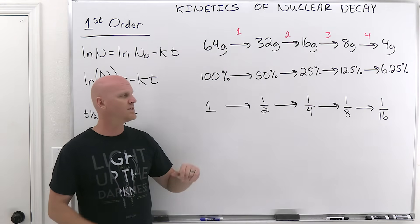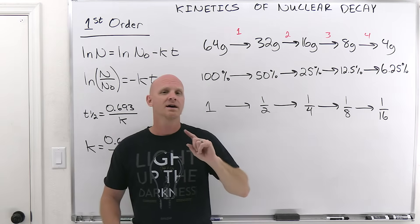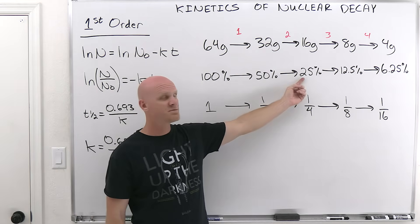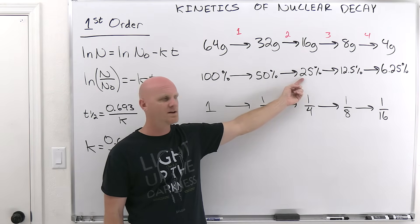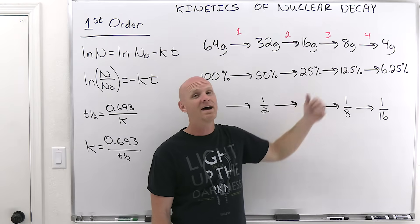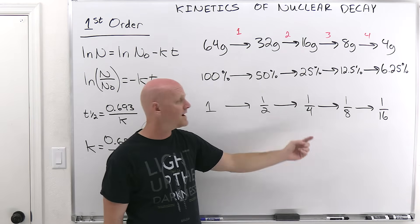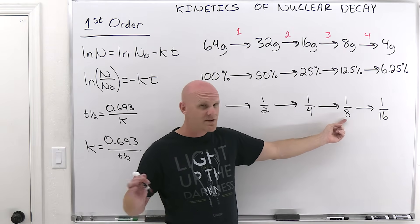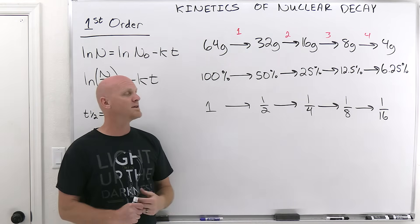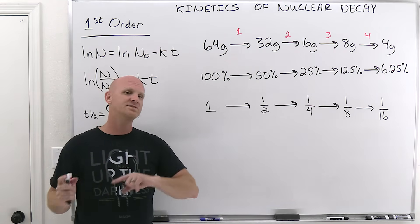Be careful, because sometimes instead of telling you what you have left, you're told how much has decayed. If you've got 25% of your sample left, that's because 75% has decayed. If you've only got 12.5% remaining, it's because 87.5% has decayed. Same with fractions — if you've only got a fourth left, three-fourths has decayed; if you've got an eighth left, seven-eighths has decayed. A lot of students don't see the difference between what fraction remains versus how much has decayed.